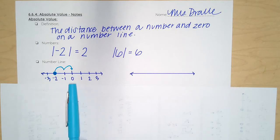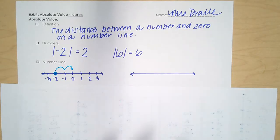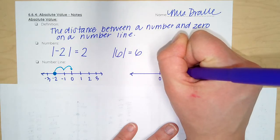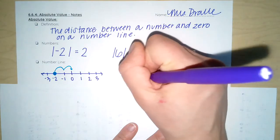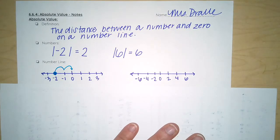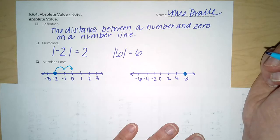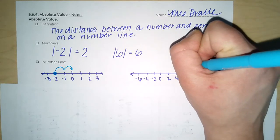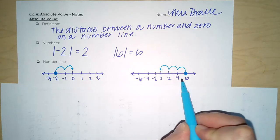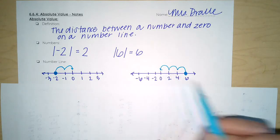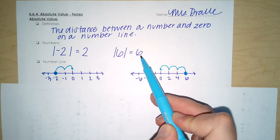Negative two is two units from zero. Let's try this one. We have positive six. My number line is a little smaller, so I'm actually going to count by twos here: negative two, negative four, negative six. So we are looking at positive six, and we are looking to see how many units away from zero six is. I count back two, four, six. It's important to note that we're counting the units between, not the spaces. So six is six units away from zero, and therefore the absolute value of six is six.